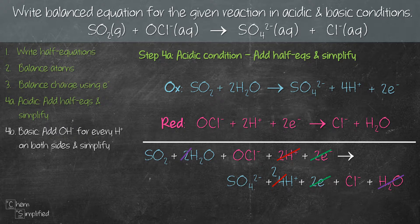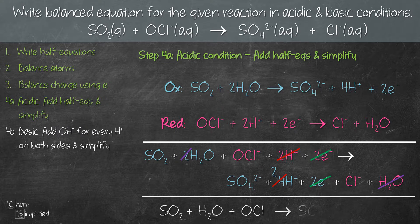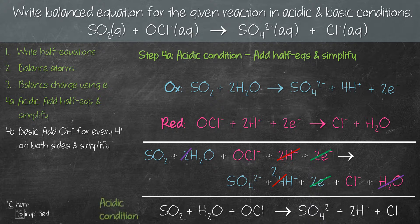Note: if you have different numbers of electrons on each side, something went wrong — most likely in step 3, you forgot to multiply or wrote the wrong number of electrons, so stop and check your work. After simplifying, we rewrite the equation: SO₂ + H₂O + OCl⁻ → SO₄²⁻ + 2H⁺ + Cl⁻. That's our balanced equation in acidic condition.